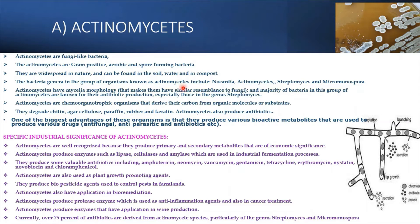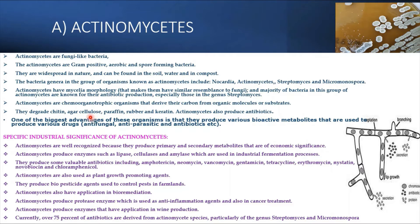The actinomyces members include Nocardia, Actinomyces, Streptomyces, and Micromonospora. These have mycelial morphology which resembles fungi, and the majority of this group are known for their antibiotic production — meaning most of the antibiotics we have are synthesized using these actinomyces members. As chemo-organotrophic organisms, they use organic molecules as substrate to derive their carbon source. Actinomyces members also have the capacity to degrade chitin, agar, cellulose, paraffin, rubber, and keratin.